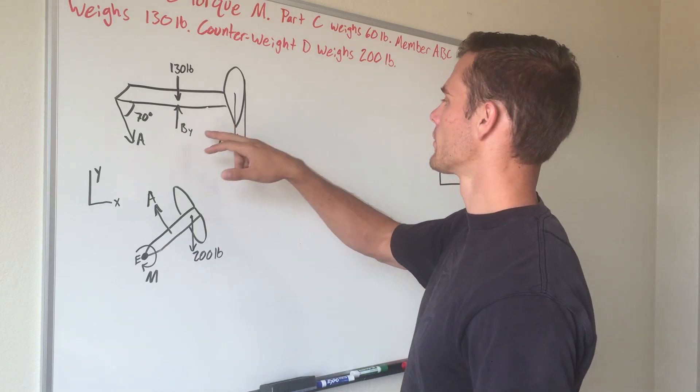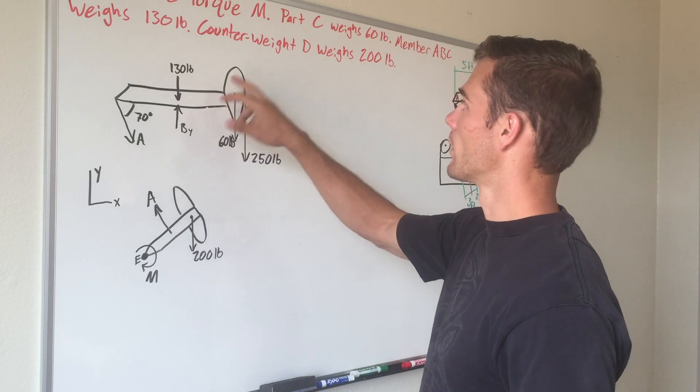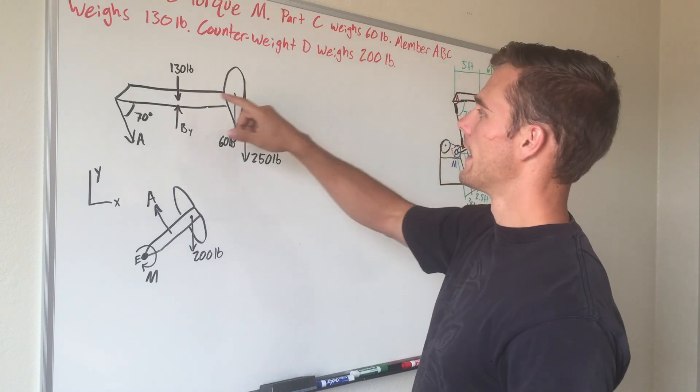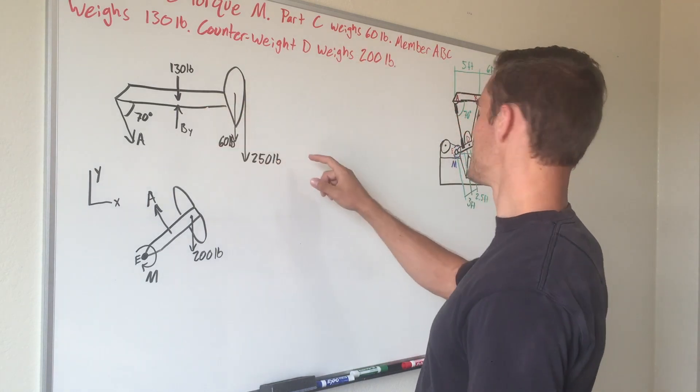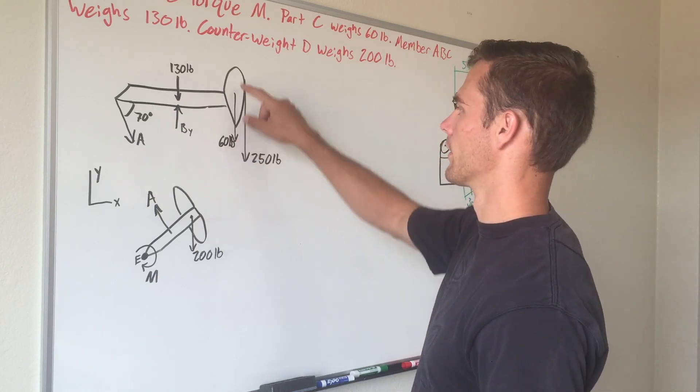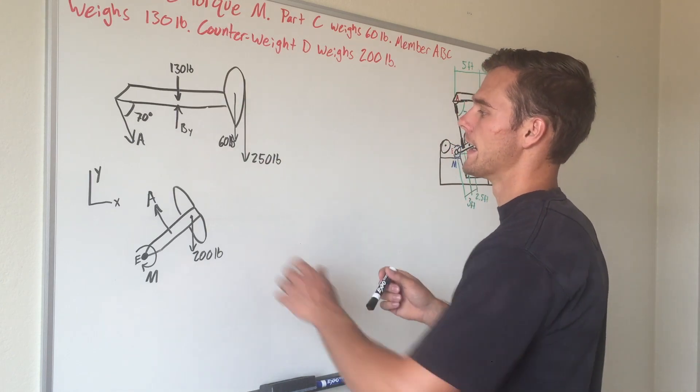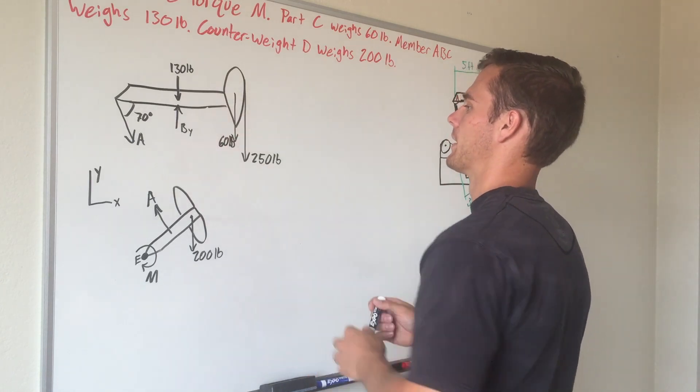With the other one, member ABC weighs 130 pounds and it's at point B, then at point C we have the weight of this member that attaches to the cable, which is 60 pounds pulling down right there.